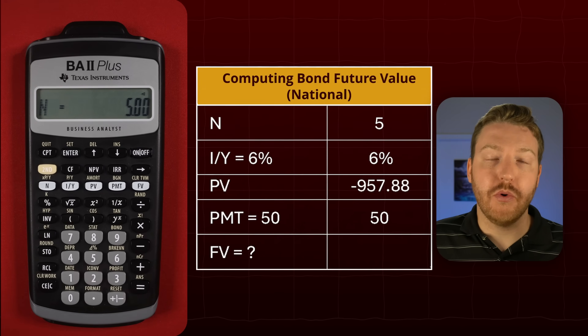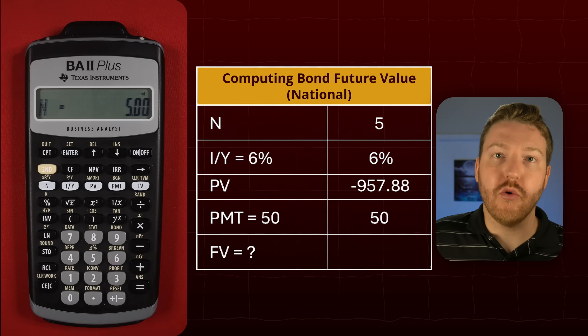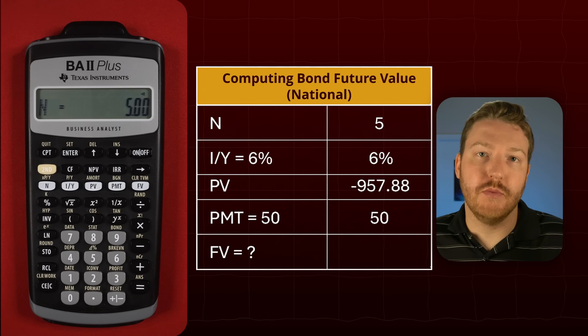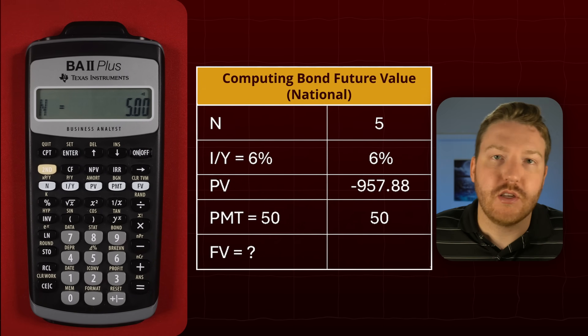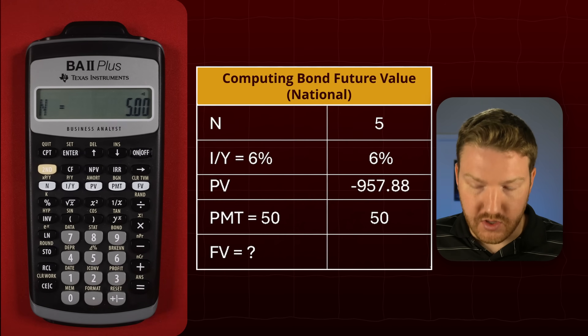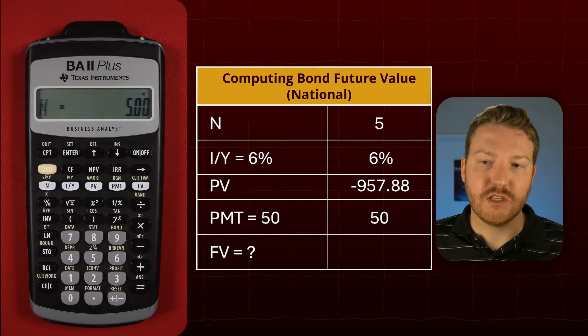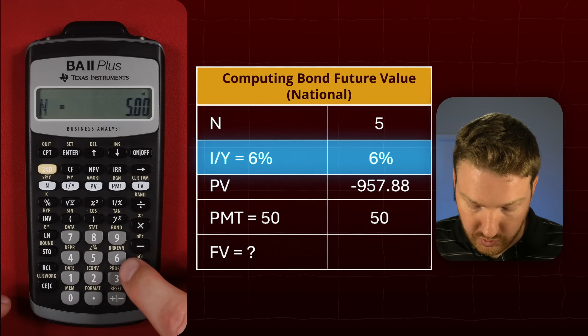Now we have to put in the annual interest rate, or the yield to maturity. So let's say based on the risk of this bond, the market is demanding an interest rate of six percent per year. That's the required rate of return. So we'll do six, then IY.